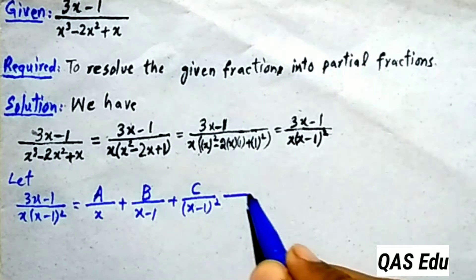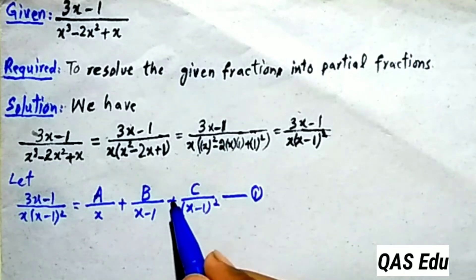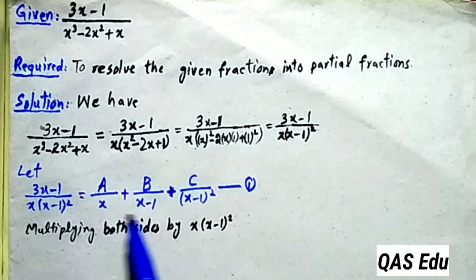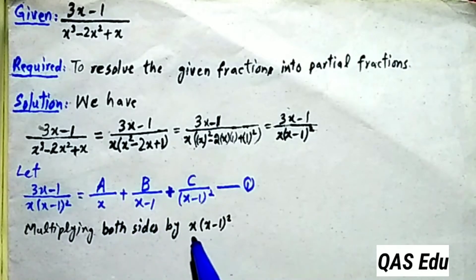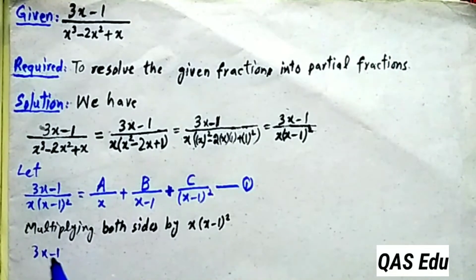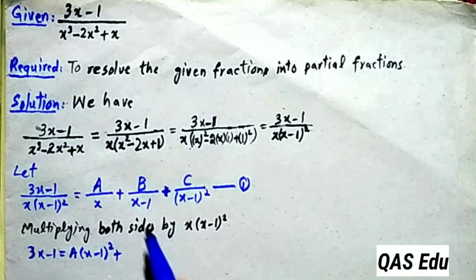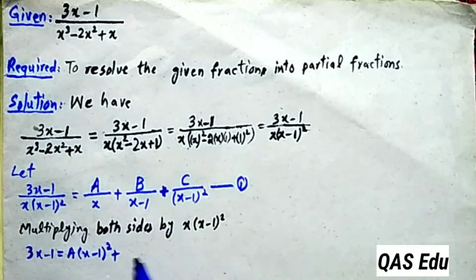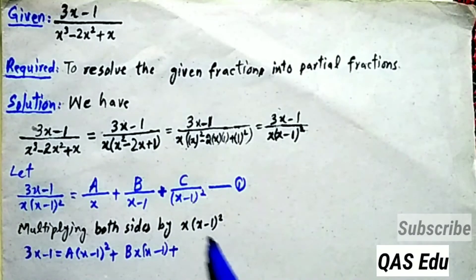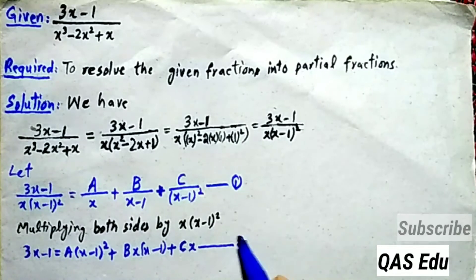Multiplying both sides by x(x-1)², on the left side we get 3x - 1. On the right side: A times x(x-1)² over x gives A(x-1)². Then B over (x-1) times x(x-1)² gives Bx(x-1). Plus C over (x-1)² times x(x-1)² gives Cx. This is equation number 2.